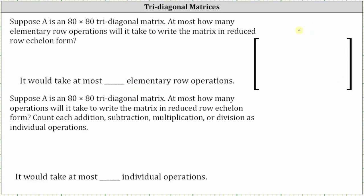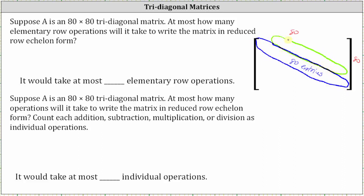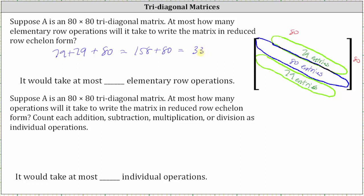Now we consider an 80 by 80 tridiagonal matrix. If the tridiagonal matrix has 80 rows and 80 columns, there would be 80 nonzero entries along the main diagonal, and there would be 79 nonzero entries above the main diagonal as well as 79 nonzero entries below the main diagonal. At most, how many elementary row operations will it take to write the matrix in reduced row echelon form? It would take up to 79 plus 79 elementary row operations to get the zeros, plus at most another 80 to get the ones along the main diagonal. This equals 158 plus 80, which equals 338 elementary row operations.